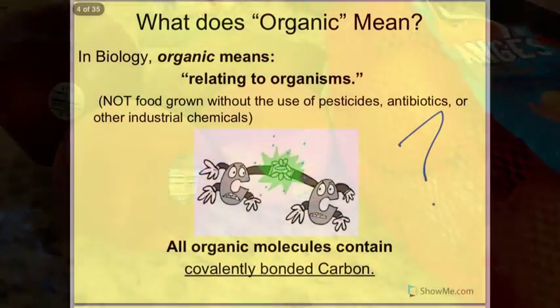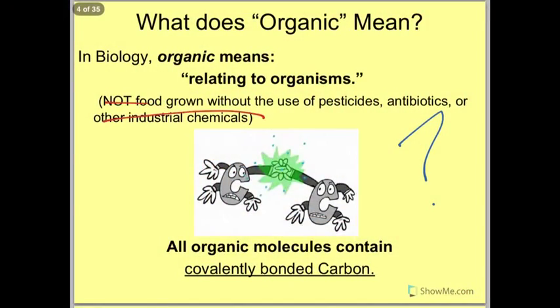Now, be sure you get this straight. In biology, organic means relating to organisms — things that contain covalently bonded carbon — not grown without the use of antibiotics, pesticide, or other industrial chemicals. We are going to forget that definition in biology class. That's something different. Organic means, in biology, something relating to carbon.